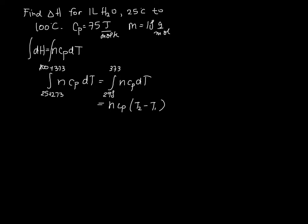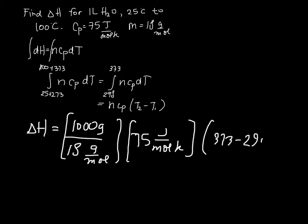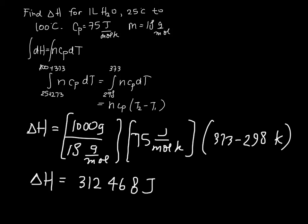Plugging in: one liter of water is 1000 grams divided by 18 g/mol to get n, times Cp of 75 J/mol·K, times (373 − 298) K. This gives us an enthalpy change of 312,468 joules for one liter of water.